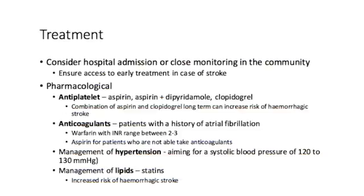From a treatment point of view, hospitalization or close monitoring in the community can be considered, and it's very important to ensure access to early treatment in case the patient is having a stroke. Pharmacological treatment is a very important component. Antiplatelet agents such as aspirin, aspirin-dipyridamole, or clopidogrel are important considerations, although the combination of aspirin and clopidogrel long term has been shown to increase the risk of hemorrhagic stroke. Anticoagulation may also be worth considering, particularly in patients with a history of atrial fibrillation. Warfarin can be started with an INR range of 2 to 3, and aspirin for patients who are not good candidates for anticoagulation.